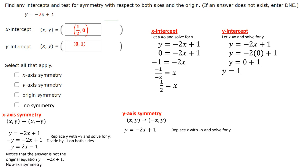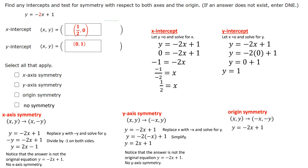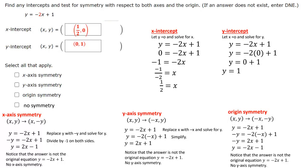To check for y-axis symmetry, we replace x with negative x and solve for y. Negative 2 times negative x gives us positive 2x + 1, which is not the same as the original equation, so it has no y-axis symmetry. For origin symmetry, we replace both x and y with negative x and negative y. When we solve for y, we get y = -2x - 1, which also does not equal the original equation. So this equation has no symmetry.